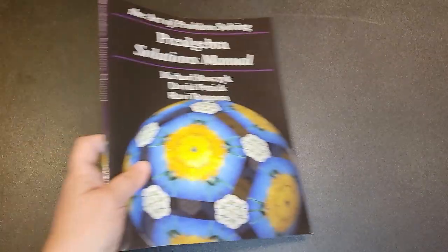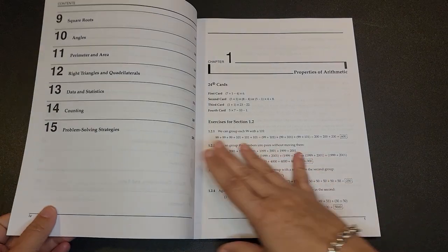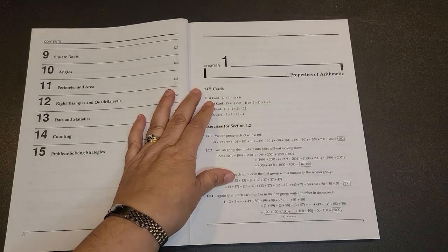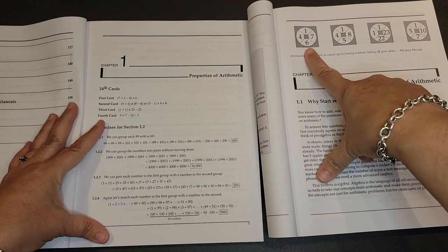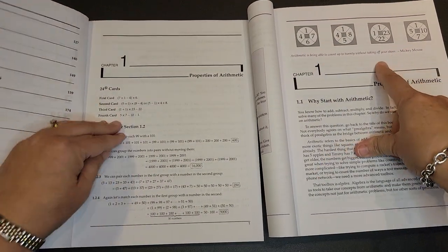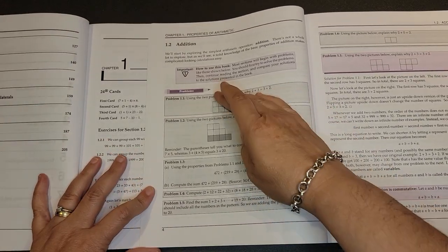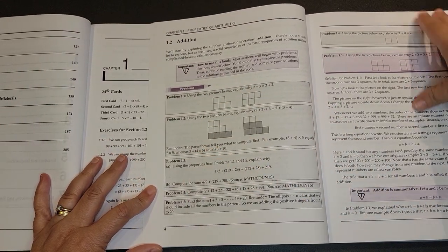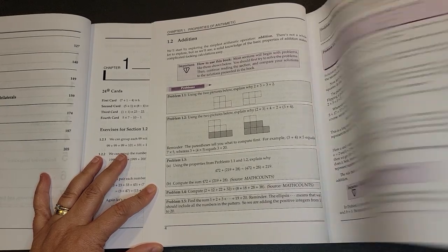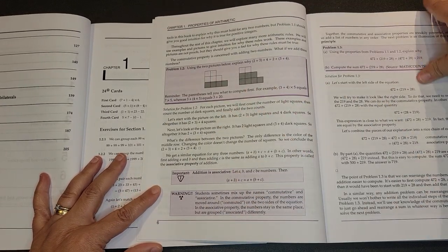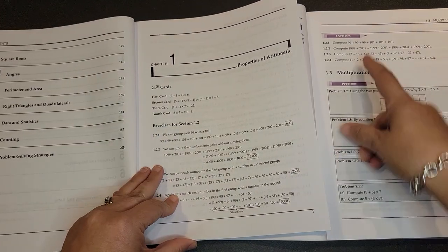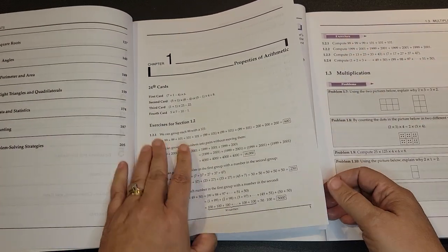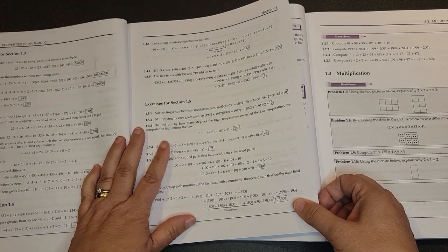Let's look at your solutions manual. Again, there is not a teacher's manual; this is your solutions manual. For chapter one, you start out with the answers to the 24 cards. For each exercise, it gives you solutions. You don't need the solutions to these problems because the solutions are included in the student text. It's the solutions to the exercises that are at the end of each chapter that you will be receiving in the solutions manual.